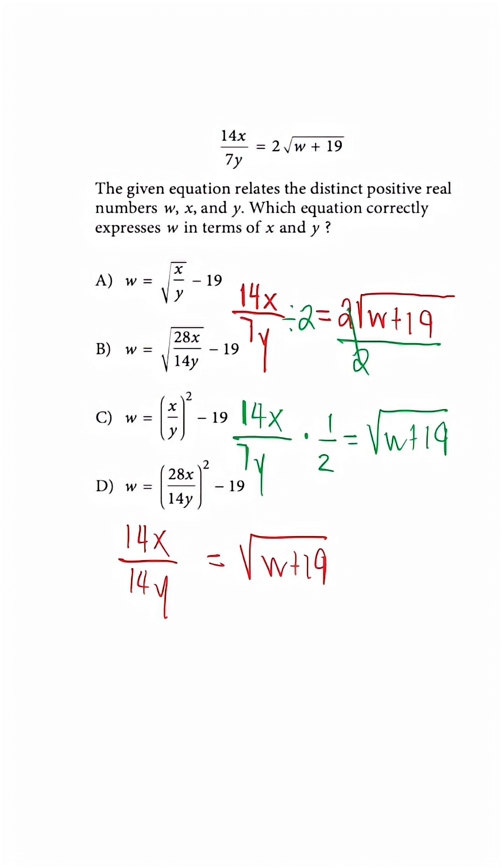At this step, we could just cancel or simplify our fraction by dividing by 14, and we're left with x over y.